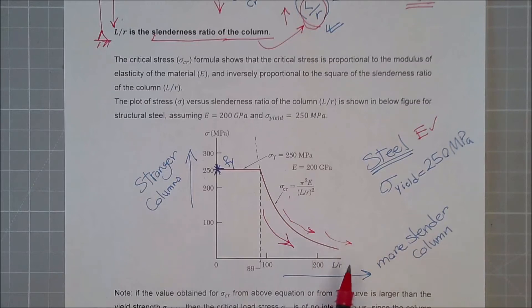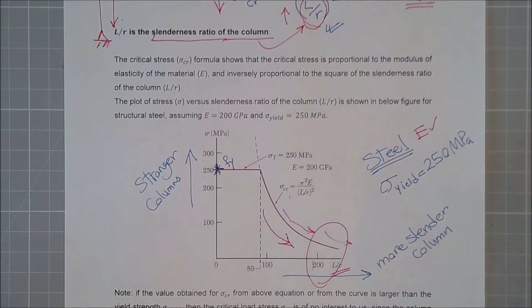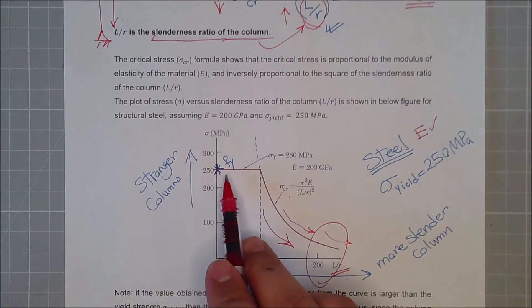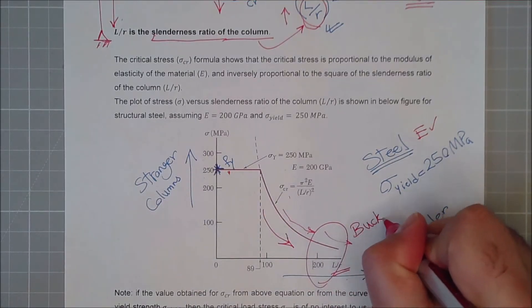So there is a higher chance that the column over here with such slenderness ratio will never ever reach to its yielding failure, because before reaching its yielding failure, it has already failed due to buckling.